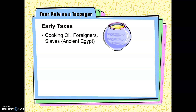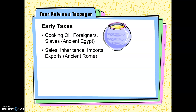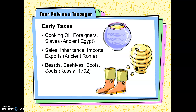Early taxes go way back in history. The Egyptians taxed cooking oil and even slaves — in some cases you paid a tax with a slave if you were in the elite. In Russia, things like beards, beehives, and boots were taxed. If you grew a beard, they would tax you — something Peter the Great tried to do to move Russians away from beards. In England in 1695, and even in our own state in 1820, if you weren't married, you paid a tax.